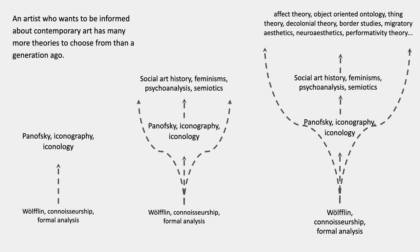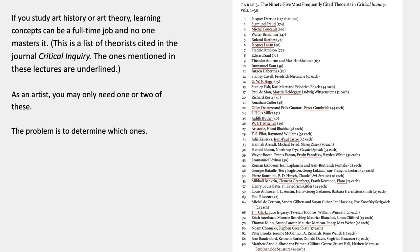Here's a summary of the growth of theories. An artist who wants to be informed about contemporary art has many more theories to learn and choose from than just a generation ago. If you study art history and art theory, learning concepts can end up being a full-time job, and no one really masters it. On the right is a list of theorists cited in the journal Critical Inquiry, a major cultural theory journal — I've underlined the ones mentioned in these lectures. As an artist, you may only need one or two of these, and of course the problem is determining which ones.